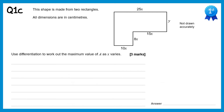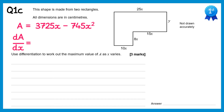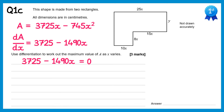For the final part of this question we need to find the maximum value of A. We know this corresponds to a stationary point when dA by dx equals zero. So let's find dA by dx. If you differentiate 3725x you get 3725 and if you differentiate 745x squared you get negative 1490x. We know this needs to equal zero, so 3725 minus 1490x equals 0. Add 1490x to both sides and you'll get 3725 equals 1490x. Then divide both sides by 1490 and you'll find an x value of 2.5.